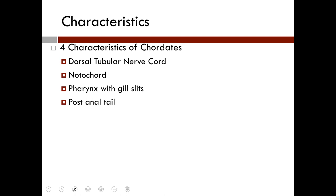All chordates have a notochord at some point in their life cycle. The notochord is a dorsal longitudinal rod composed of spongy connective tissue surrounded by a tough, fibrous sheath. It is firm yet flexible and provides support, playing an important role in embryonic development. This supportive, stiffening, cartilaginous rod with its gel-like pulposus is eventually replaced by the spine.